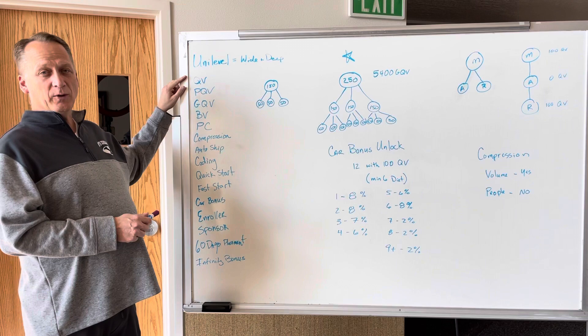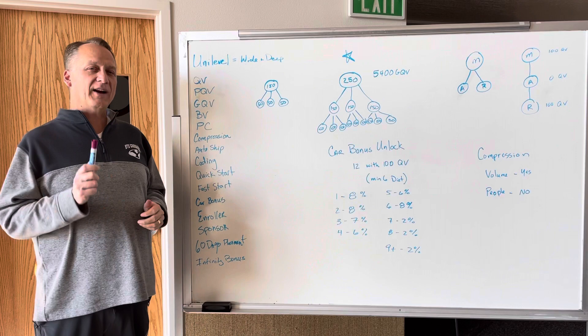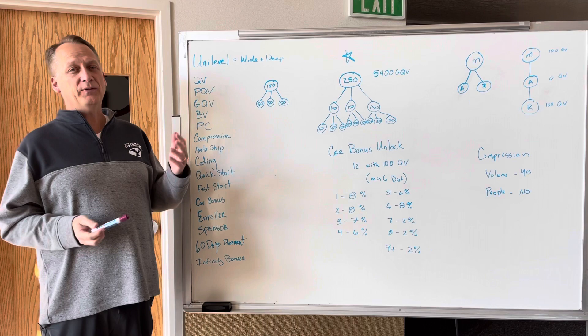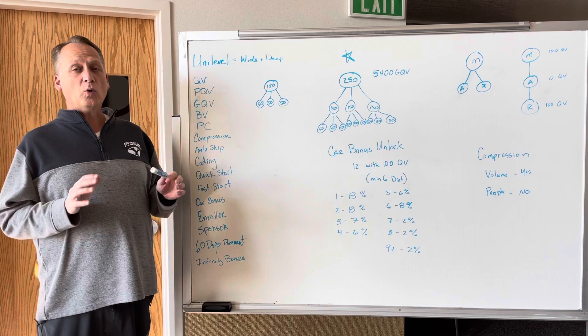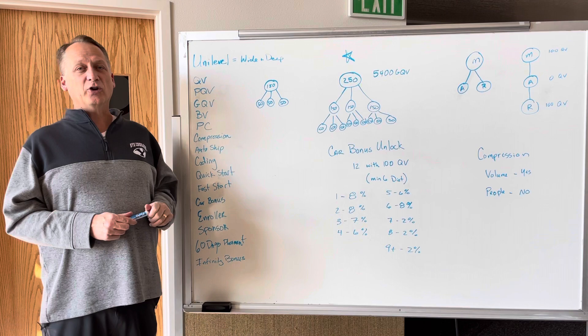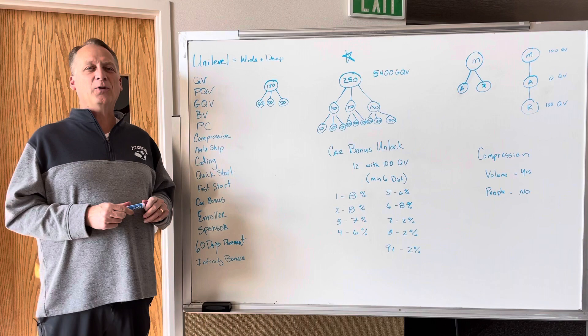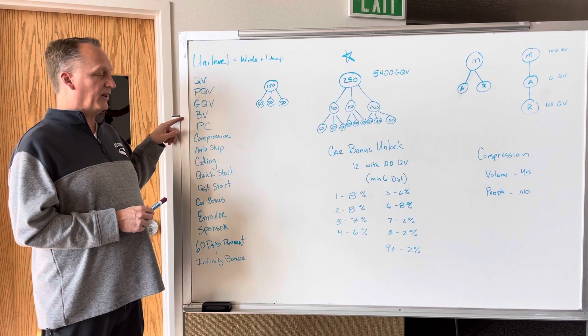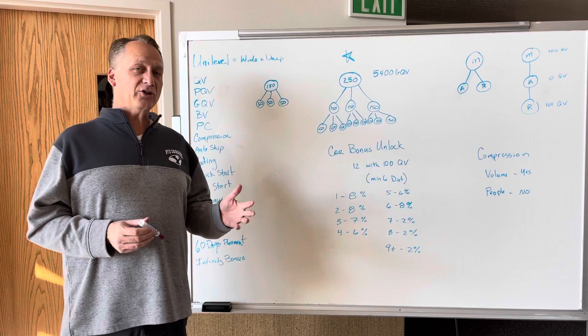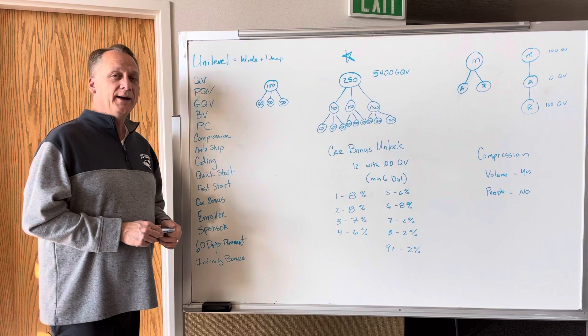QV is your qualifying volume. PQV is your personal qualifying volume — what you use to qualify your account. Each rank has a personal qualifying volume requirement, sometimes 100, 150, or 250 or more, depending on the rank. You get PQV through your personal purchases, personal auto ship, or any products you buy from Longevity. GQV is your personal qualifying volume plus all QV in your first three levels. BB is business volume — what you're paid off of. PC is a preferred customer.